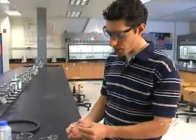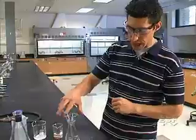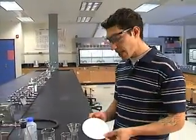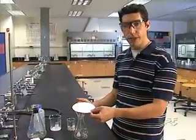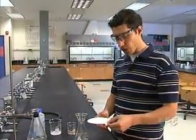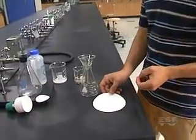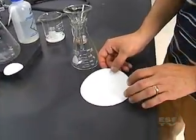I'm just going to put the funnel into the flask and now I need to get my filter paper which is going to filter our solid from our liquid into the funnel, and of course right now it doesn't fit. What we have to do is fold the filter paper and we're also going to flute it. In the process of fluting we're going to increase the surface area so the filtration is that much more efficient.